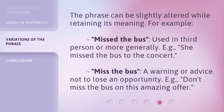The phrase can be slightly altered while retaining its meaning. For example, 'Missed the bus,' used in third person or more generally — e.g., 'She missed the bus to the concert.' It can also be used as a warning or advice not to lose an opportunity — e.g., 'Don't miss the bus on this amazing offer.'